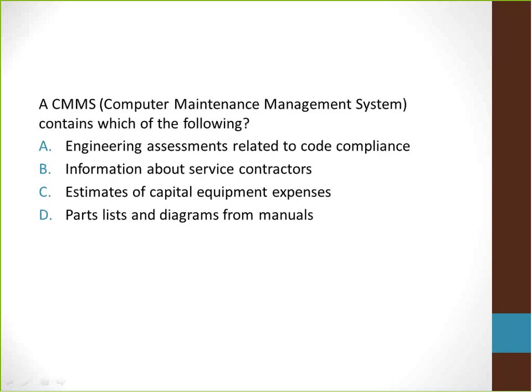A CMMS or computerized maintenance management system contains which of the following? A, engineering assessments related to code and compliance. B, information about service contractors. C, estimates of capital equipment expenses. D, parts lists and diagrams from the manual. D is the correct answer here. A CMMS contains information that has been scanned from various manuals such as parts lists.